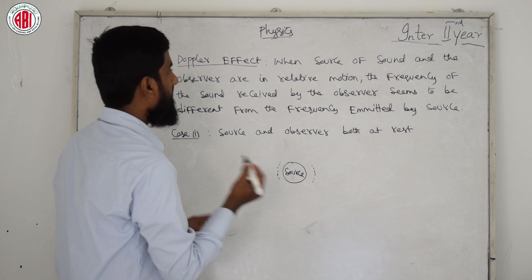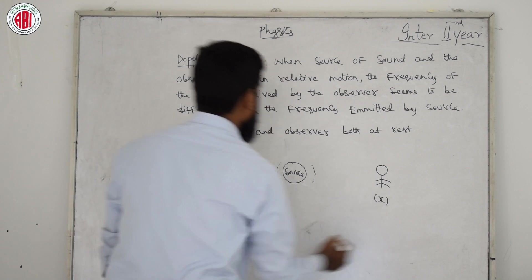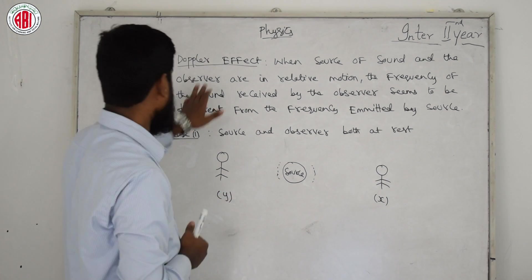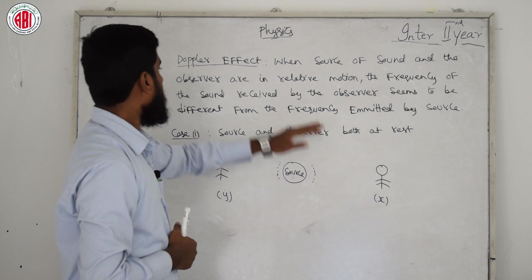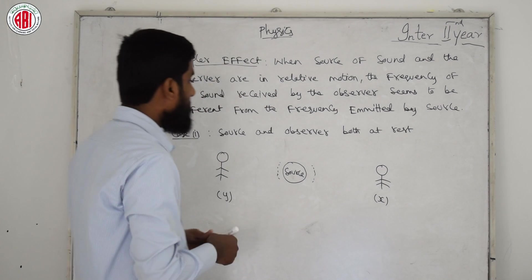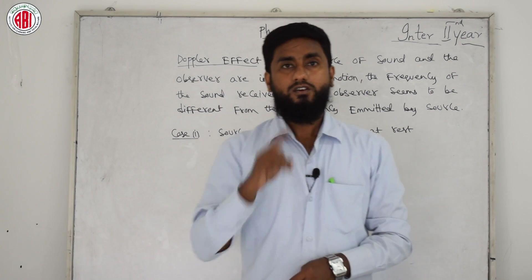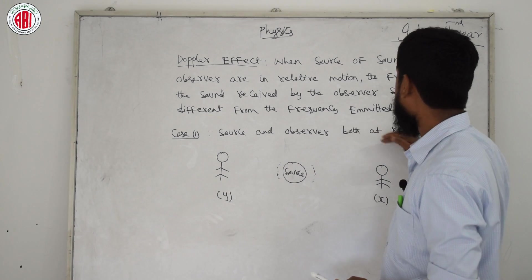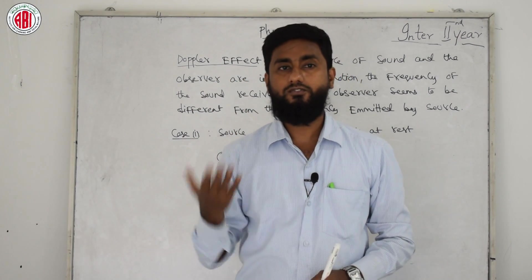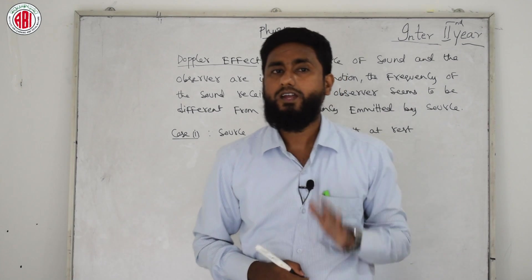We have two observers on either side — observer X on the right and observer Y on the left. They are in relative motion. The frequency received by the observer seems different from the frequency emitted by the source. There are mainly 4 cases. Case 1: source and observer both are at rest. Cases 2, 3, and 4 follow from there.